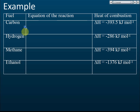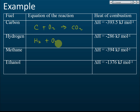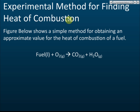Here are a few examples of heats of combustion: carbon is −393.5 kJ/mol, hydrogen is −286 kJ/mol, methane is −890 kJ/mol, and ethanol is −1376 kJ/mol. For the combustion equation of carbon: carbon reacts with oxygen to produce carbon dioxide. For hydrogen, methane, and ethanol, I would like you to write the equations yourself.